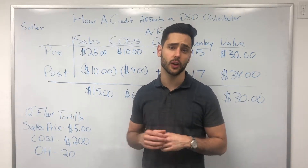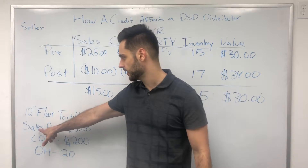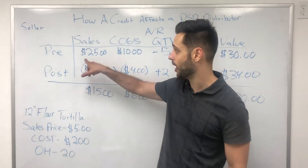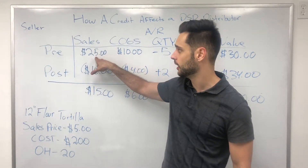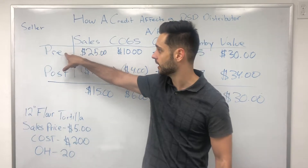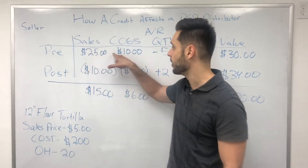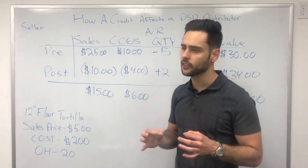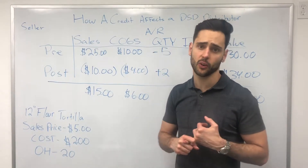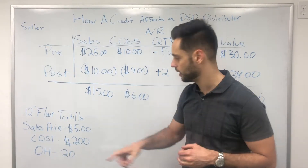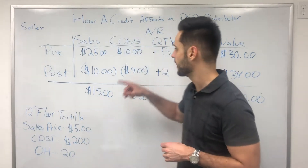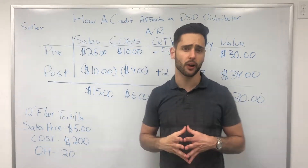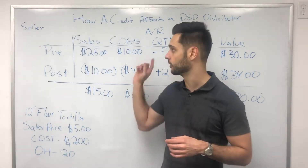Let's get into the calculations. Let's say we sell five tortillas to Johnny Supermarket at five dollars each. The total sale is $25. Now, the cost of goods sold is the cost of each unit times the quantity sold — the cost per unit is $2 and the quantity is five, so the cost of goods sold is $10. That means the gross profit on this sale is $15.